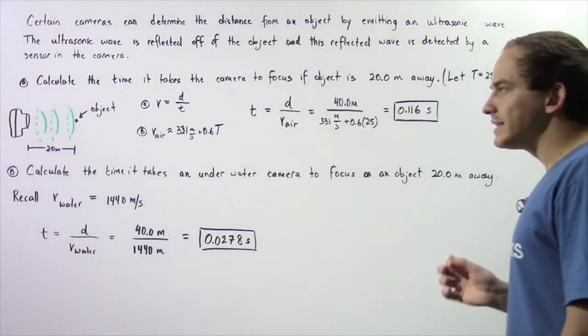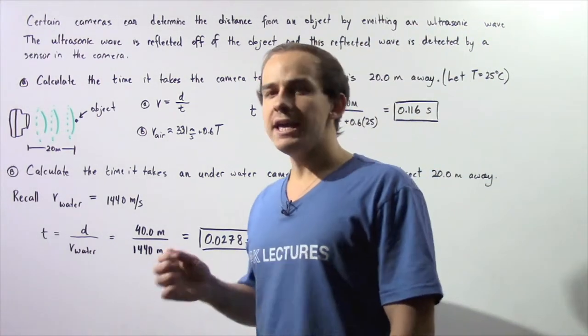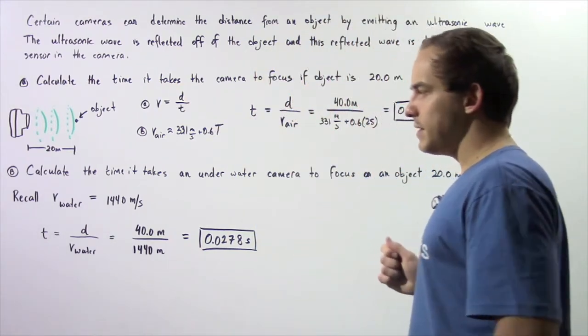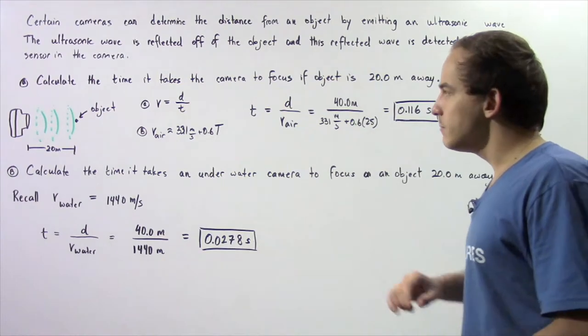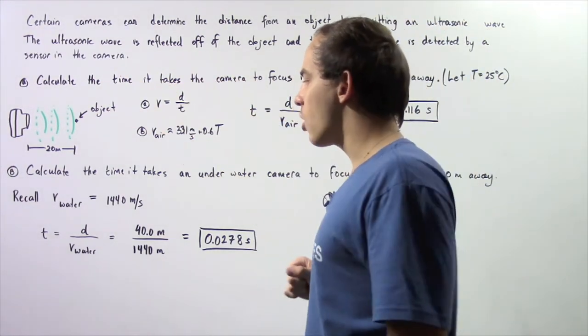Recall that the velocity of our ultrasonic wave in pure water is 1440 meters per second. We simply need to use the equation that we spoke about in part A.